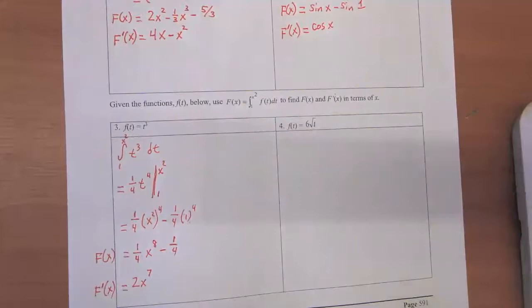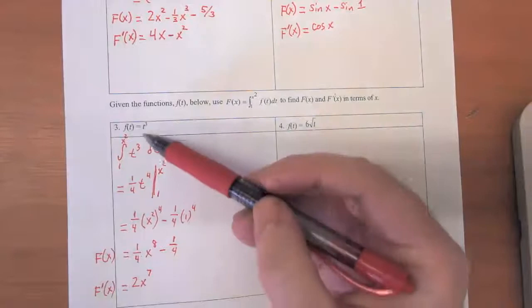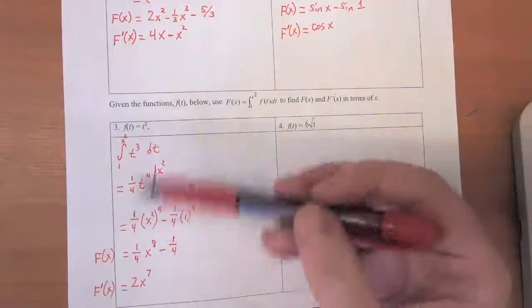So once again, we've got our answer, but this time it's not the same as the function we started from. And the reason that it's not is because we didn't do our definite integral from one to x. We actually had a function of x in there.